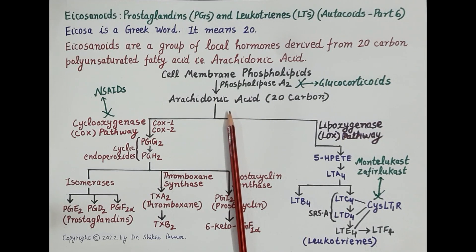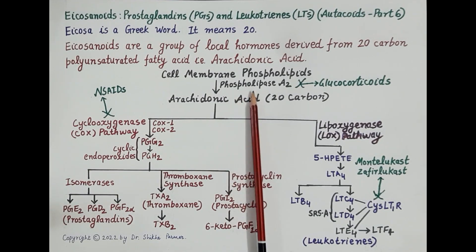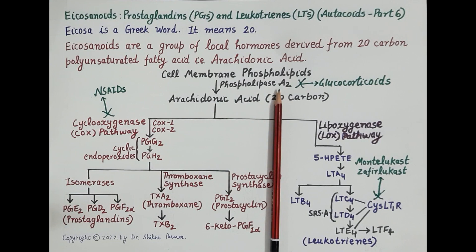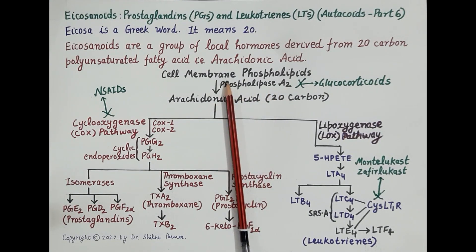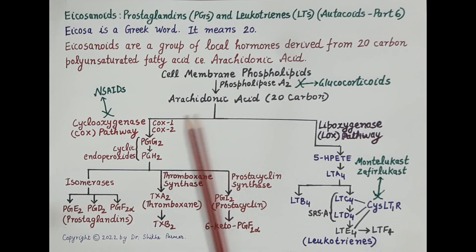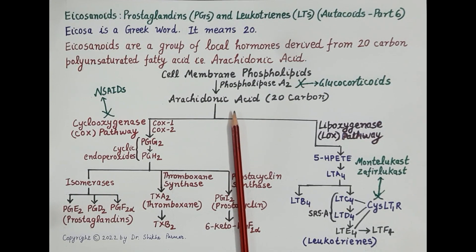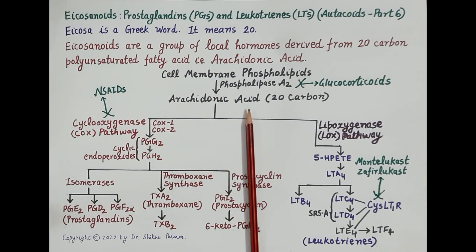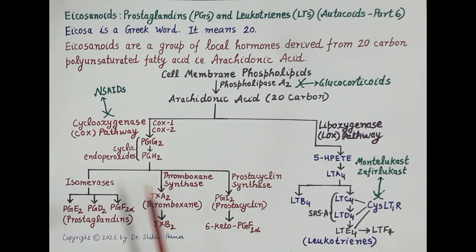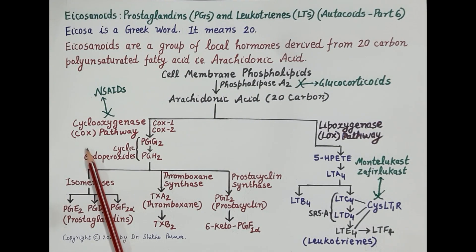Certain chemical and mechanical stimuli activate the enzyme phospholipase A2, which hydrolyzes cell membrane phospholipids to release arachidonic acid. This arachidonic acid then produces eicosanoids via two pathways: the cyclooxygenase (COX) pathway and the lipoxygenase (LOX) pathway.